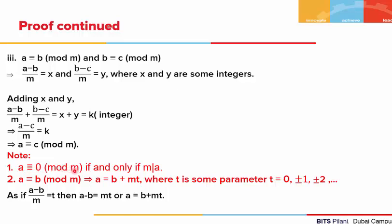Note: a will be congruent to 0 mod of m if and only if m divides a. So a is congruent to 0 if and only if a is divisible by m. The second thing to note is that a congruent to b mod of m means a equals b plus m times t, where t is some parameter. t can take different values: 0, ±1, ±2, and so on. We get this because a minus b upon m equals t, so multiplying both sides, a minus b equals mt, and therefore a equals b plus mt.